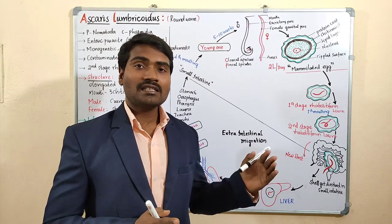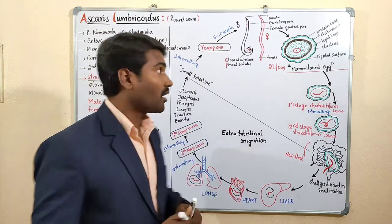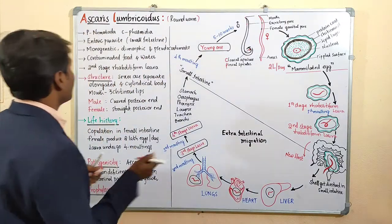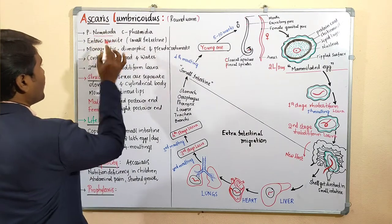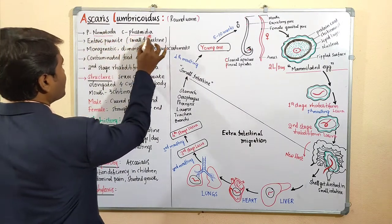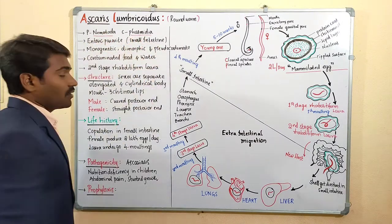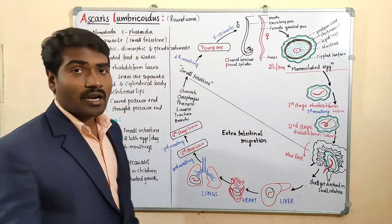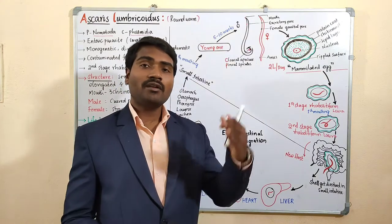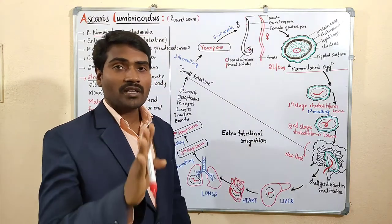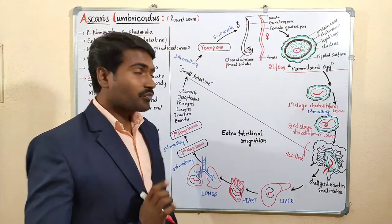It belongs to Class Phasmidia. Phylum Nematoda has two classes: Aphasmidia and Phasmidia. Ascaris comes under Phasmidia.